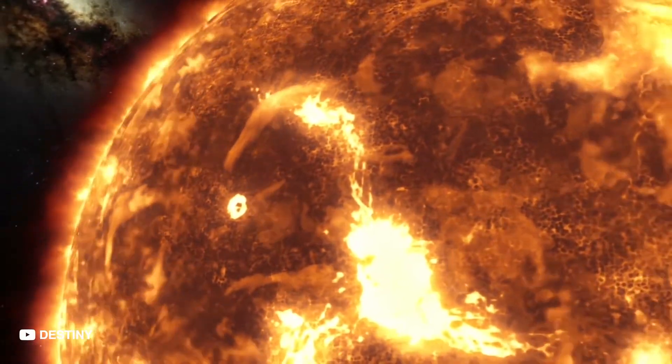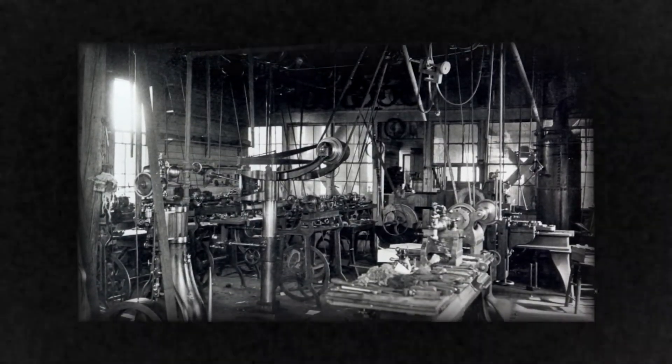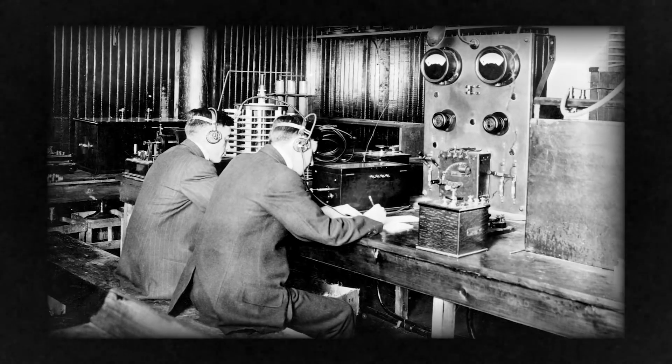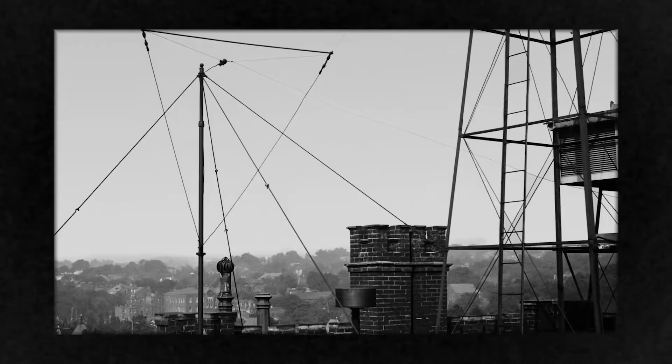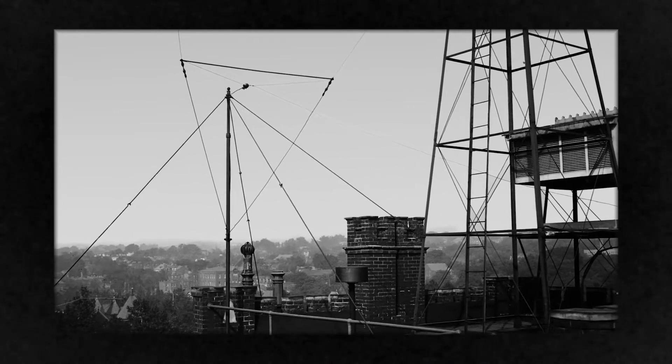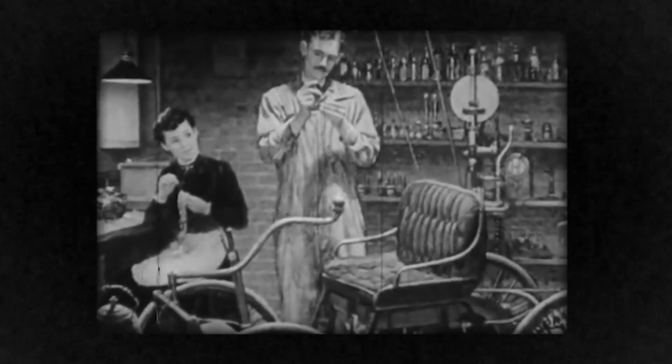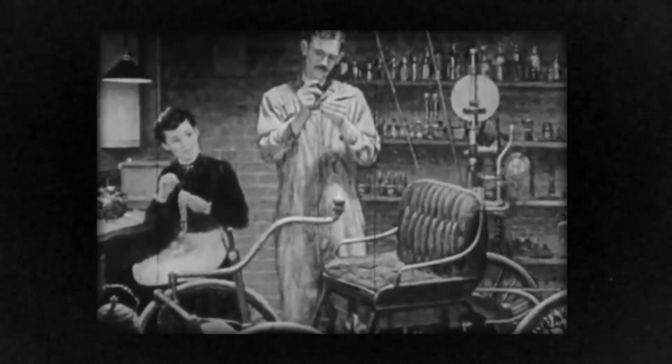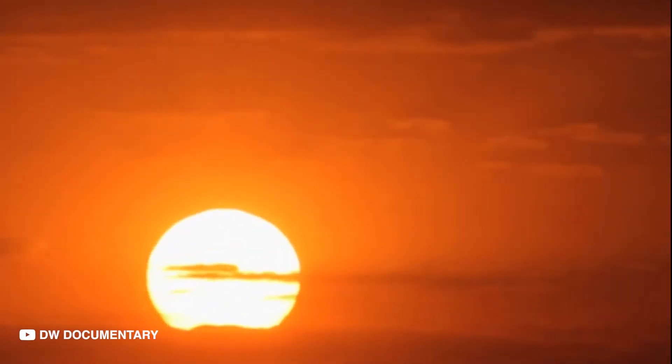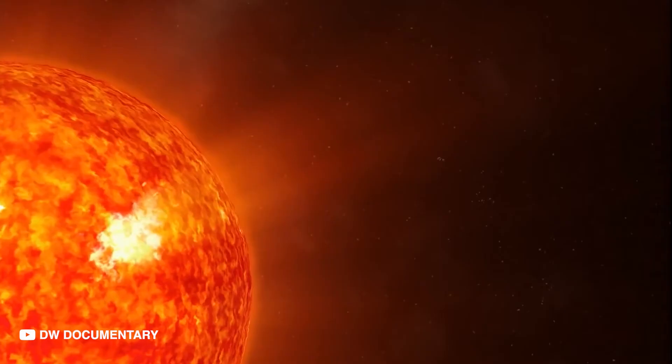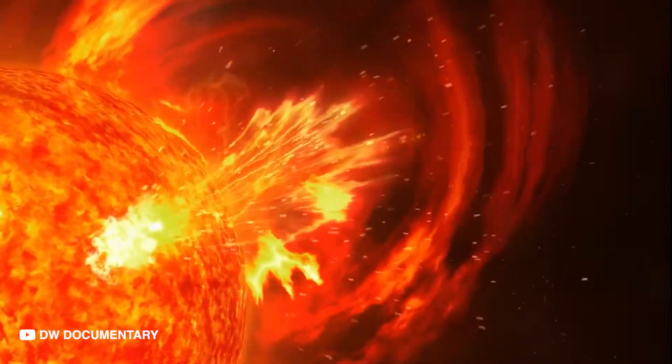Another flare on the 1st and 2nd September caused telegraph systems all over Europe and North America to fail. In some cases, giving operators electric shocks, telegraph pylons threw sparks. Some telegraph operators found they could continue to send and receive messages despite having disconnected their power supplies. But a Carrington event is the best case scenario where our Sun is concerned, because solar storms are not all we have to worry about.